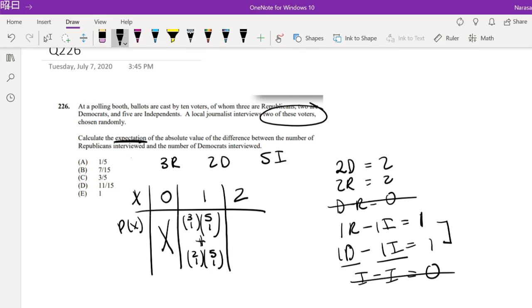So when can it be equal to two? Hey, we talked about this. When they're both Democrats. So that's equal to one. Out of two Democrats, we're picking two. Or when there's two Republicans. So out of three Republicans, we're picking two.